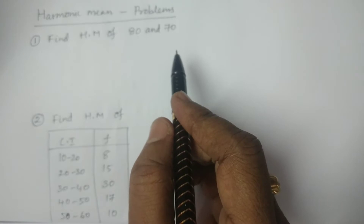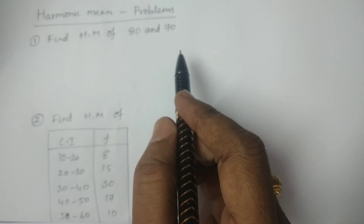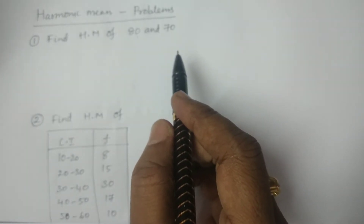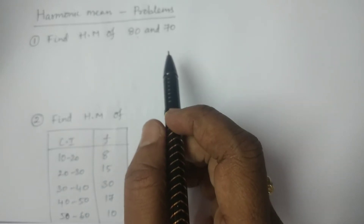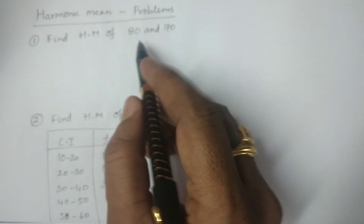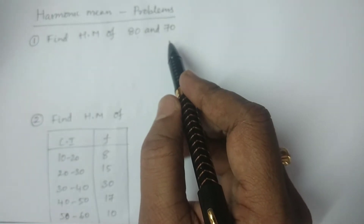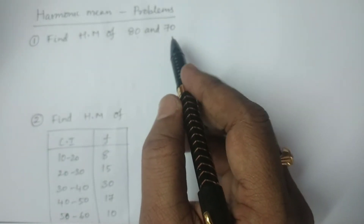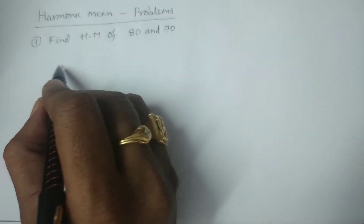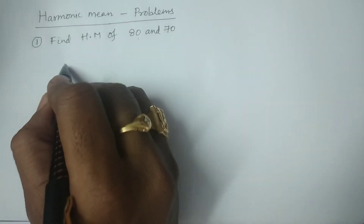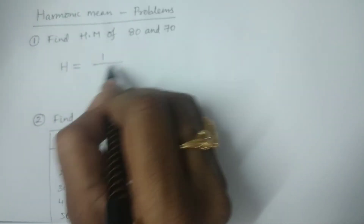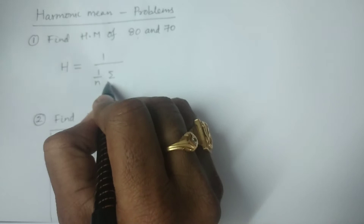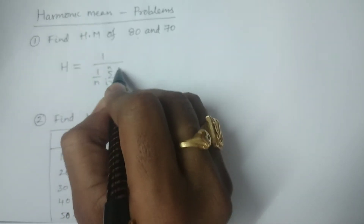What is the formula of harmonic mean? The formula of harmonic mean is nothing but the reciprocal of the arithmetic mean of reciprocals. If x1, x2, ..., xn are the observations, then harmonic mean is calculated by: H = 1 / (1/n × Σ(i=1 to n) 1/xi).